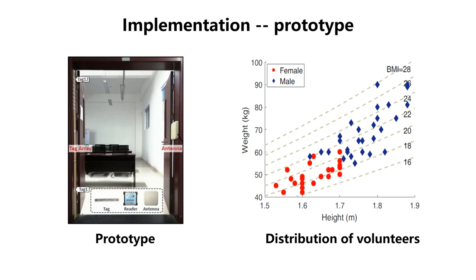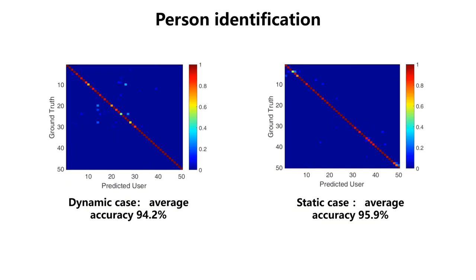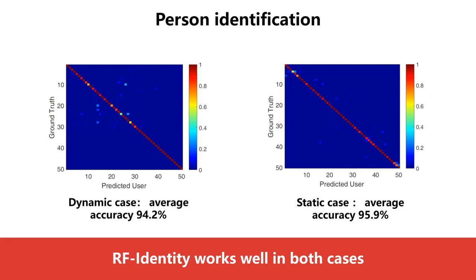We deploy 12 tags to form a tag array on one side of the door, and the other side is the reader. The horizontal distance between the antenna and the middle point of the tag array is 1.5 meters. The height of the antenna is 1.2 meters above the ground. In our default experiments, we recruit 50 volunteers — 28 males and 22 females — with different heights and weights. We first present the overall person identification results. Our system can achieve an average accuracy of 94.2% and 95.9% in dynamic and static person identification respectively, which demonstrates that RF-Identity works well in both cases.